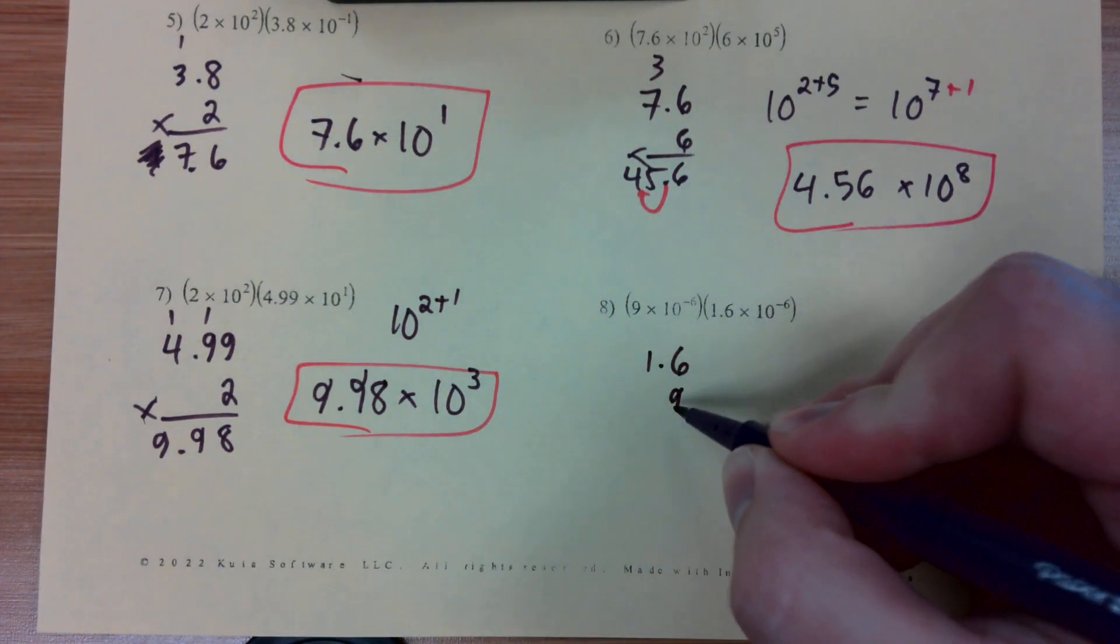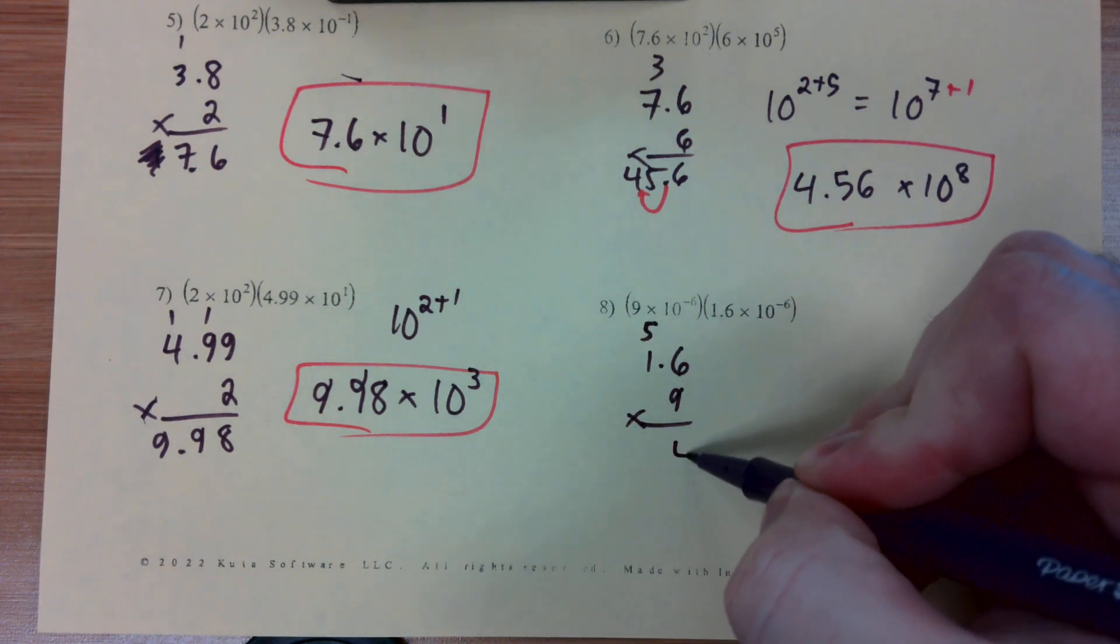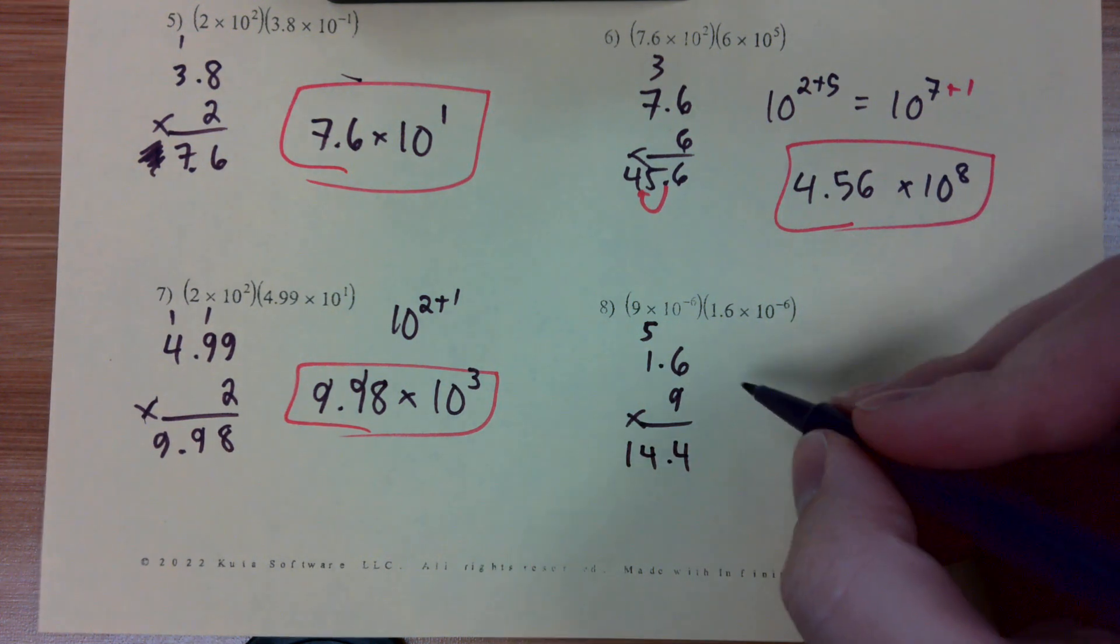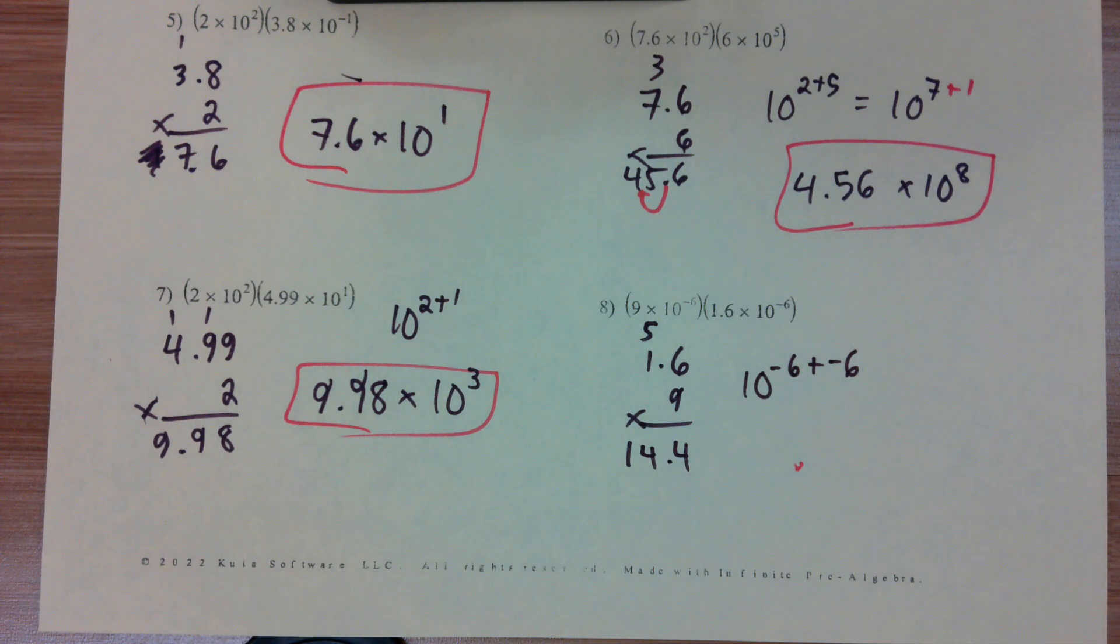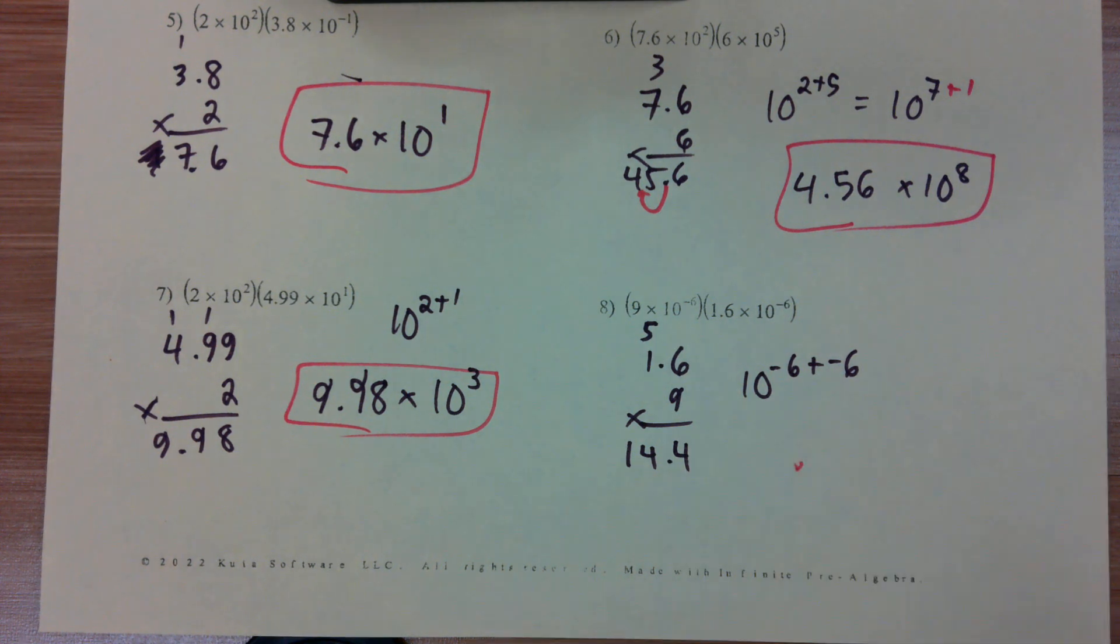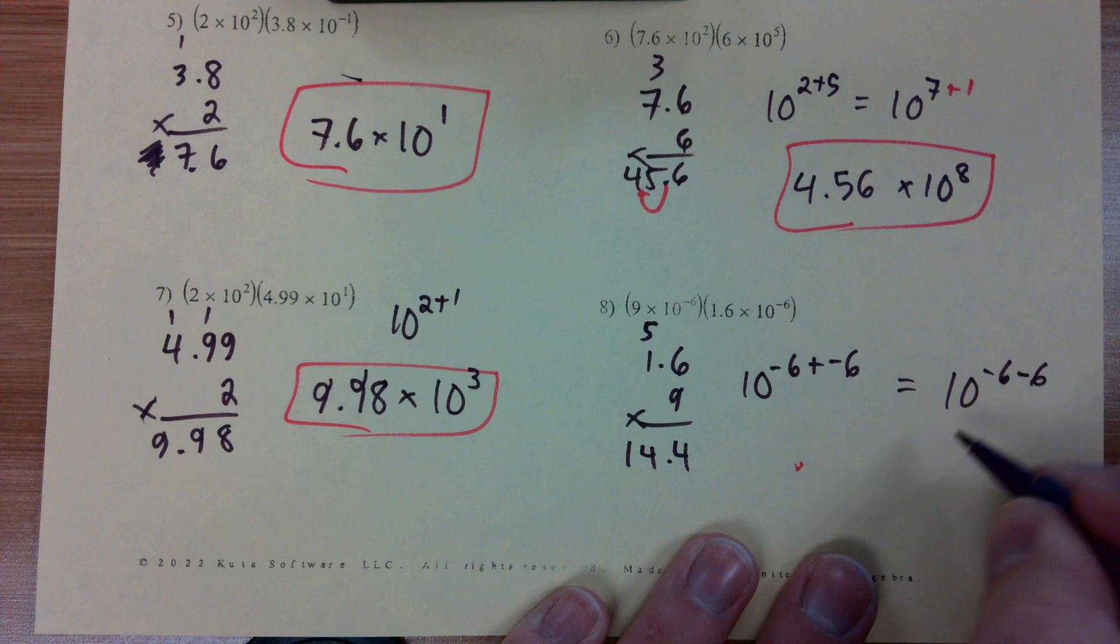And then we got 1.6 times 9. 6 times 9 is 54, 9 times 1 is 9 plus 5 is 14. Here's something interesting we can review real quick. We've got 10 to the power of negative 6 plus negative 6. Plus next to a minus sign, what does that turn into again? A minus sign. Negative 6 minus 6 gives us 10 to the negative 12.